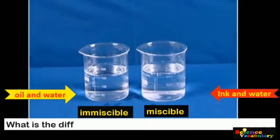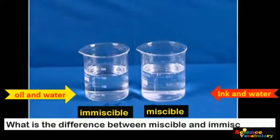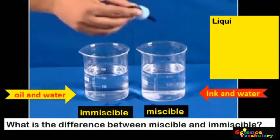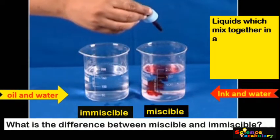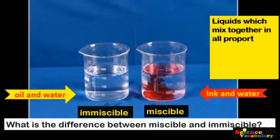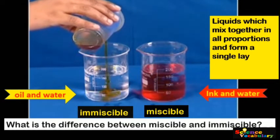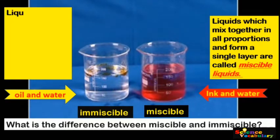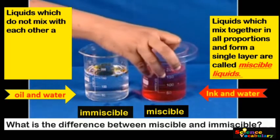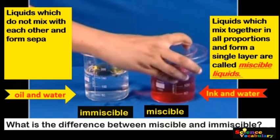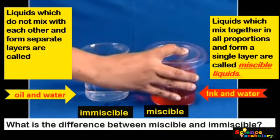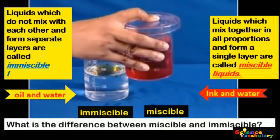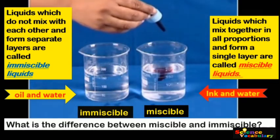What is the difference between miscible and immiscible? Liquids which mix together in all proportions and form a single layer are called miscible liquids. Liquids which do not mix with each other and form separate layers are called immiscible liquids.